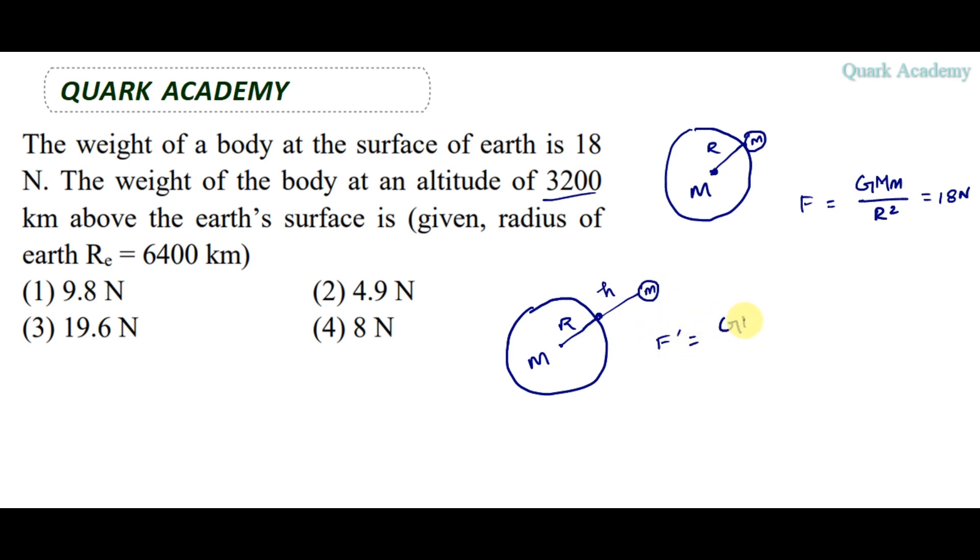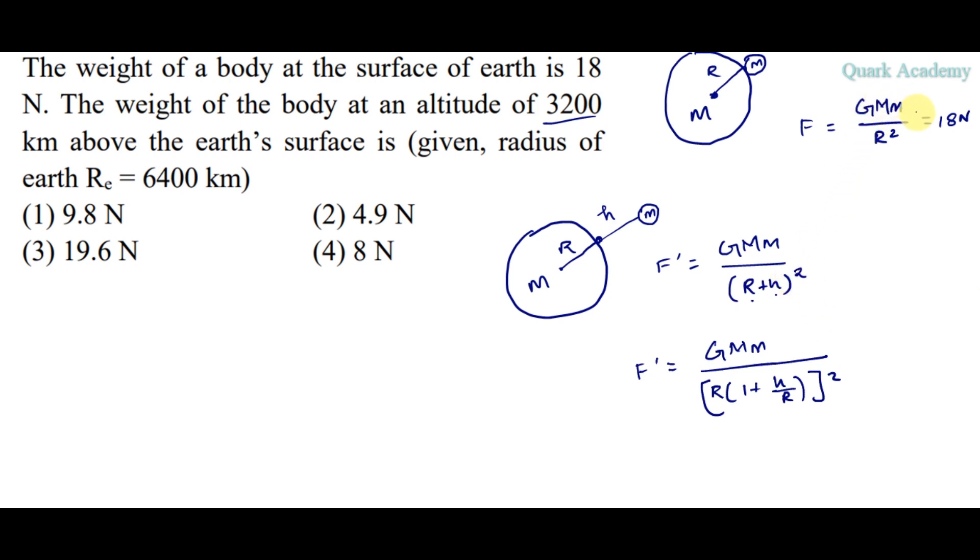In this case, the force is G M m by R plus H whole square. The distance between the center of the Earth and the mass. We have the radius of Earth and the mass of the Earth. So we have G, M, m by R square.